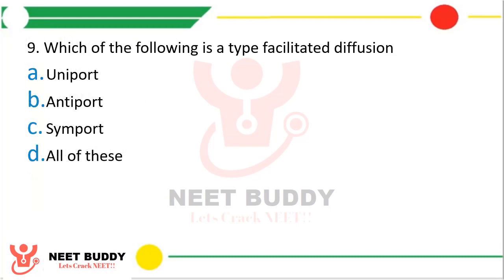Question 9: Which of the following is a type of facilitated diffusion? Option A: uniport, option B: antiport, option C: symport, option D: all of these. The correct answer is option D, all of these — uniport, antiport, and symport are all three types of facilitated diffusion.